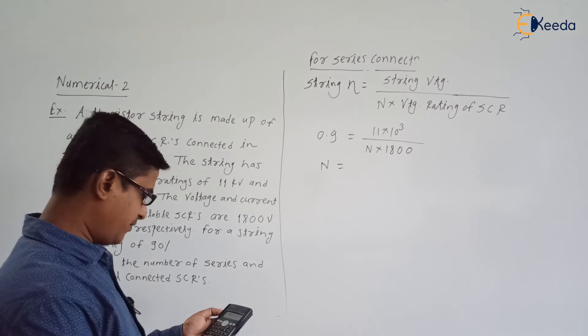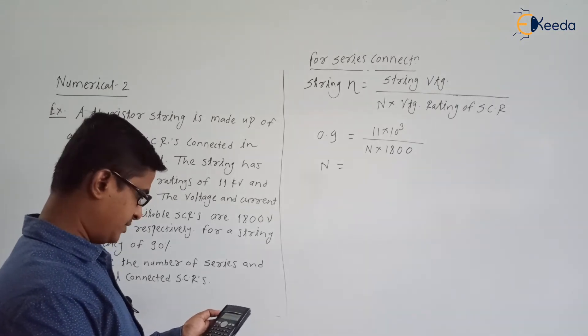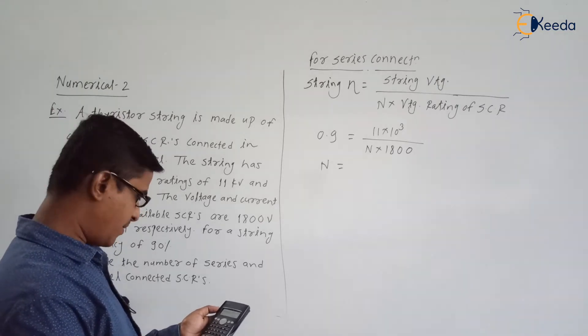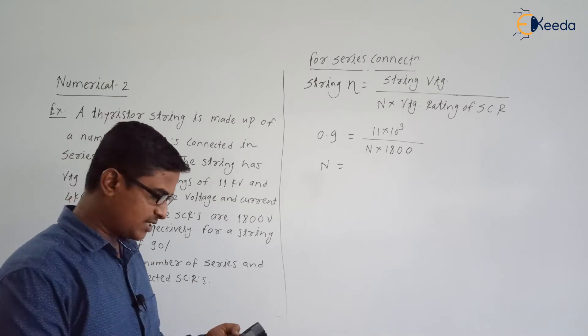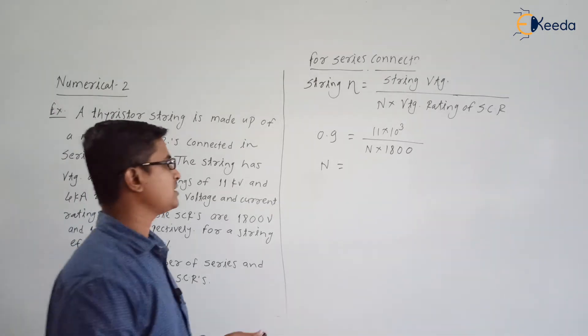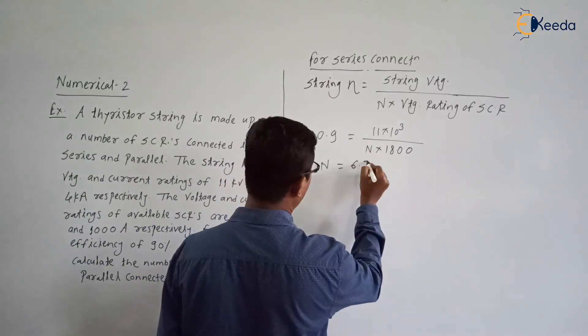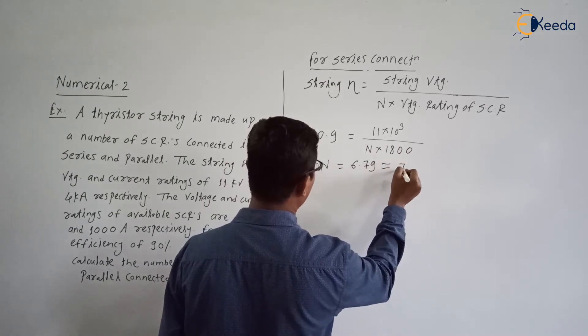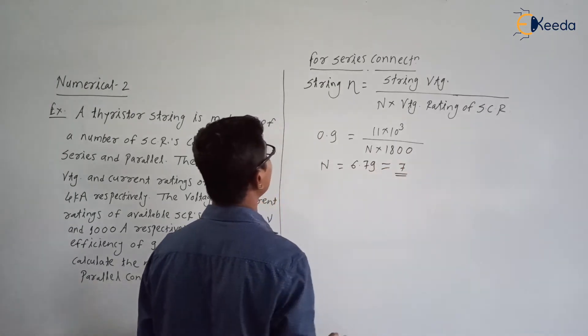So from this can we find the number of SCRs required to be connected in series? Yes, we can find. 11 kV divided by 1800 divided by 0.9. So it is 6.79, so it is 7. So 7 SCRs we need to connect in series.